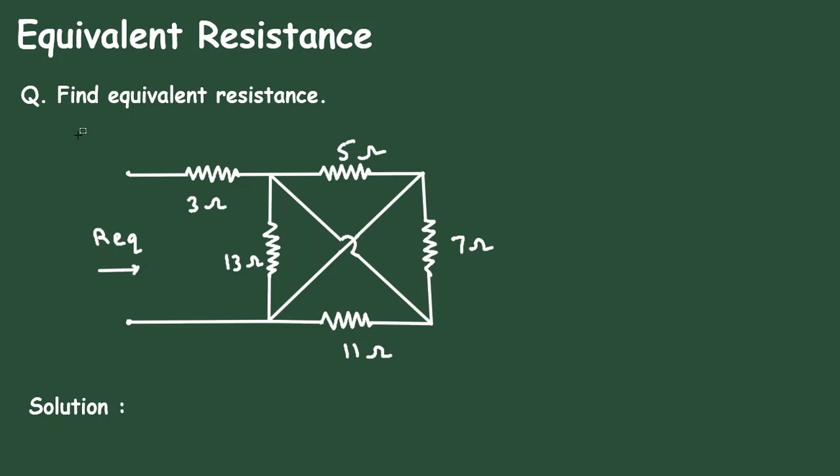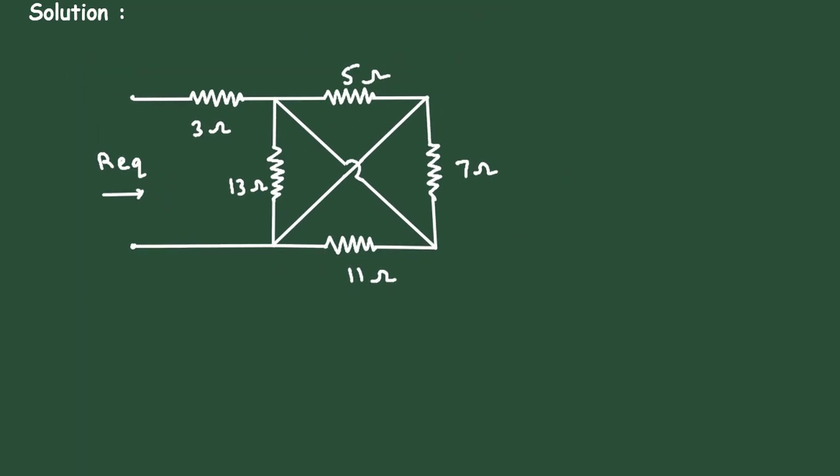First of all, we will copy the given circuit from here. Now, here we can see this 7 ohm and this 11 ohm are connected in parallel.